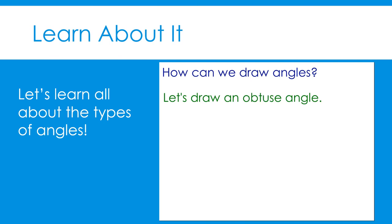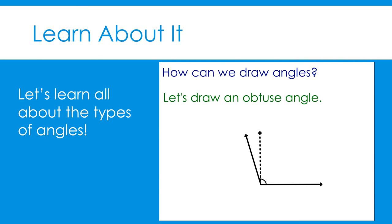We can also draw an obtuse angle. Let's start with a ray again. We know that an obtuse angle measures between 90 and 180 degrees, so its measurement is greater than a right angle. If we visualize our right angle again, we can determine the angle measure that creates an obtuse angle. This is one example of an obtuse angle — greater than 90 degrees and less than 180 degrees, open more than a right angle and less than a straight angle. It could also look like this, or this, or many more possibilities. There are so many possibilities when drawing an obtuse angle without a more specific measurement.